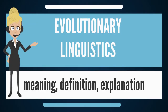Evolutionary Linguistics is a subfield of psycholinguistics that studies the psychosocial and cultural factors involved in the origin of language and the development of linguistic universals. The main challenge in this research is the lack of empirical data. Spoken language leaves practically no traces. This led to the abandonment of the field for more than a century, despite the common origins of language hinted at by the evolutionary relationships among individual languages established by the field of historical linguistics.